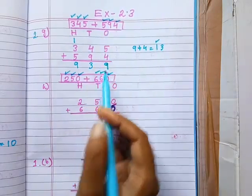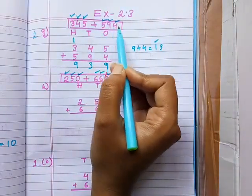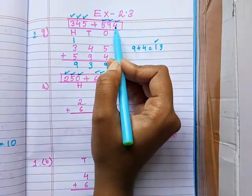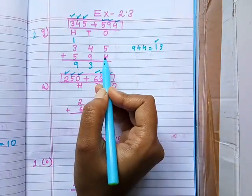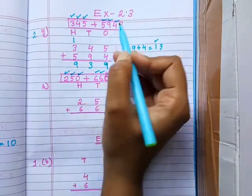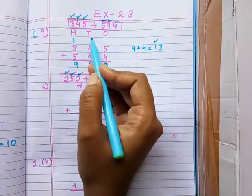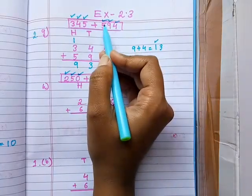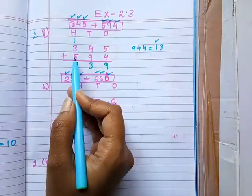Next number: 594. The 1's place digit is 4, so write down 4 in 1's place. The 10's place digit is 9, so write down 9 in 10's place. The 100's digit is 5, so write down 5 in 100's place.